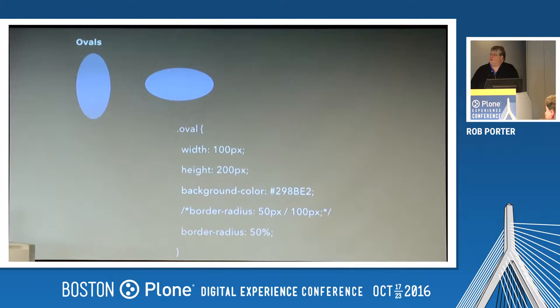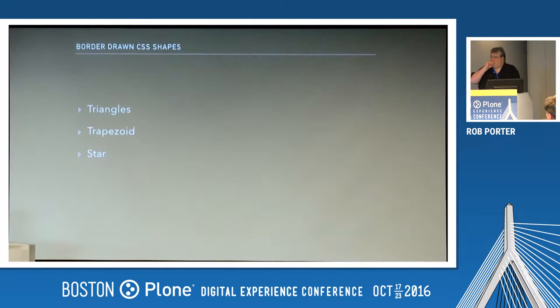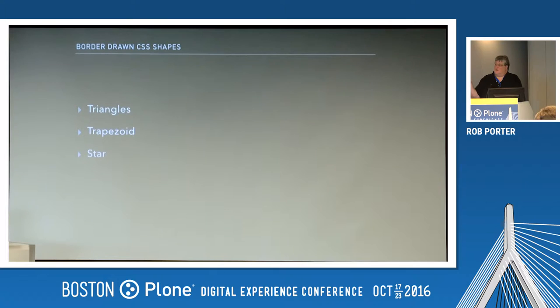Next, these are all drawn — the triangles, the trapezoid, and star, which is just two triangles anyway — they're drawn using borders.